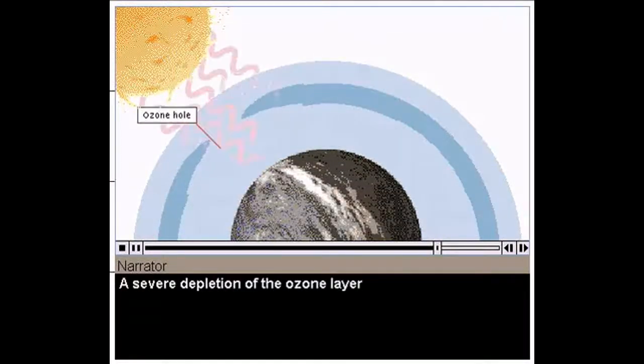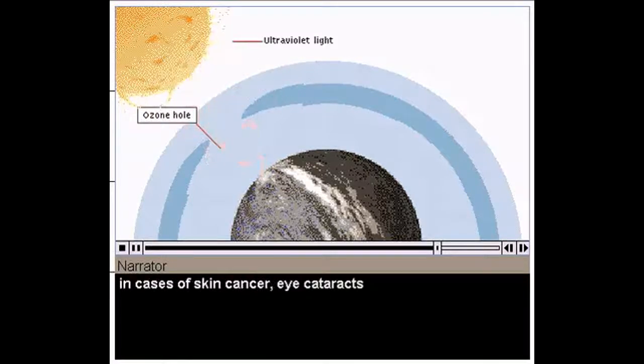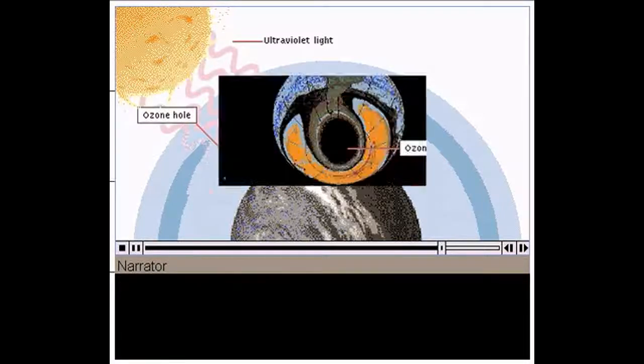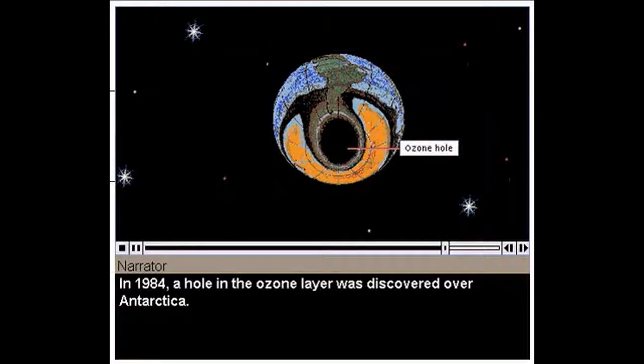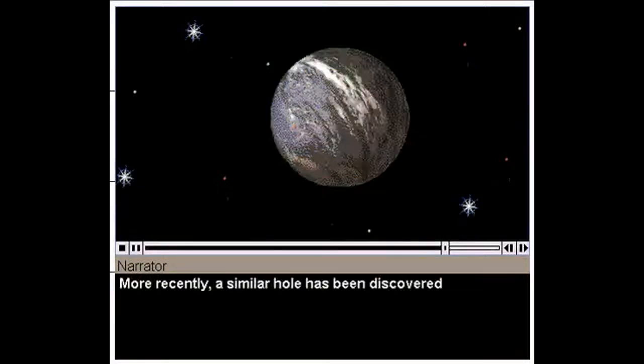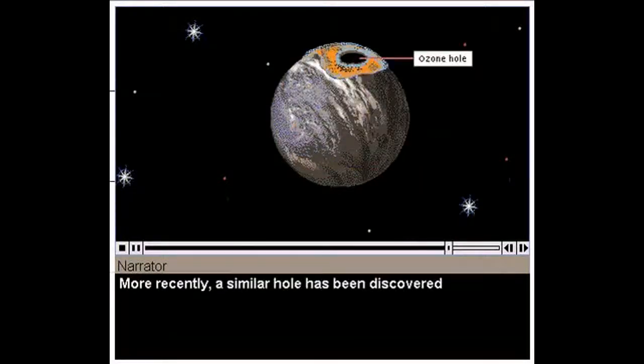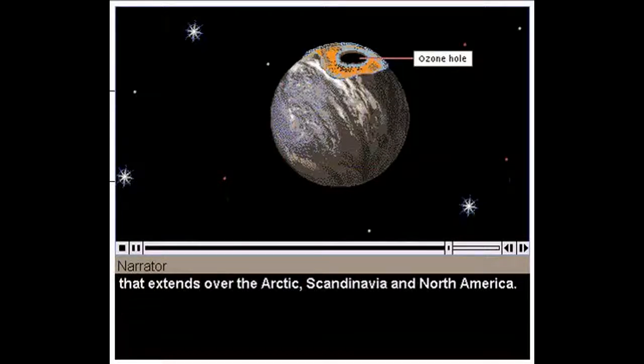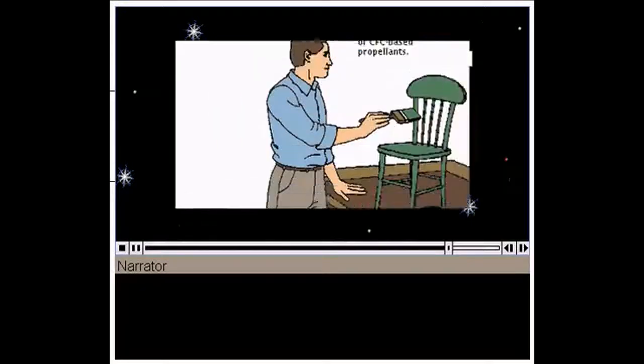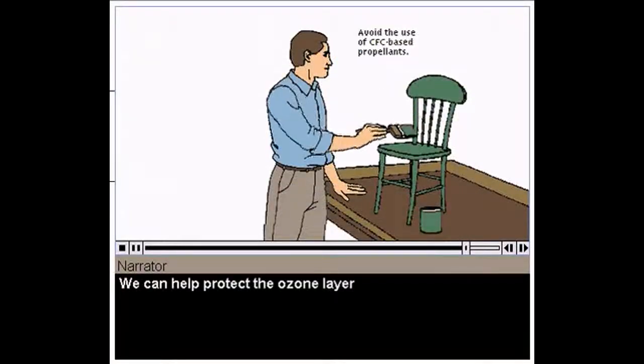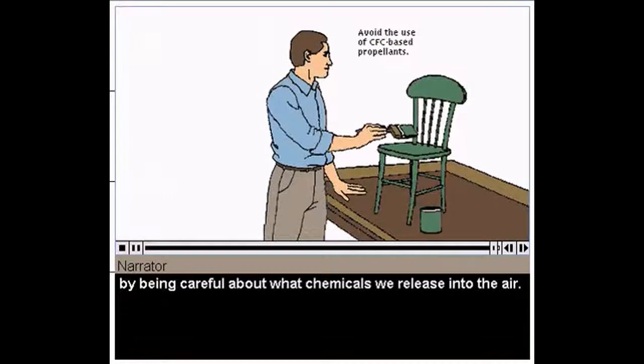A severe depletion of the ozone layer would result in an increase in cases of skin cancer, eye cataracts, and suppression of the immune system in humans and other species. Food crops sensitive to ultraviolet rays could also be affected. In 1984, a hole in the ozone layer was discovered over Antarctica. More recently, a similar hole has been discovered that extends over the Arctic, Scandinavia, and North America. We can help protect the ozone layer by being careful about what chemicals we release into the air.